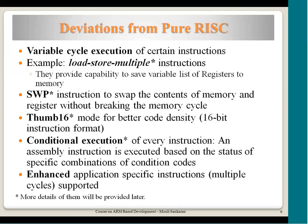The swap instruction is required for supporting semaphore-type operations. There is also Thumb — a 16-bit mode of ARM where the instruction width is 16-bit instead of 32-bit. Conditional execution is another feature where every assembly instruction is executed based on the status of a particular conditional flag. At this point, you need to be aware that though we claim ARM is pure RISC, there are some deviations to support the embedded application environment.